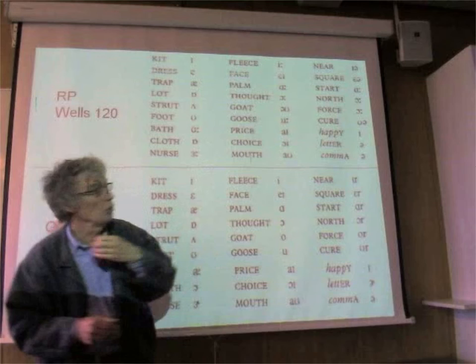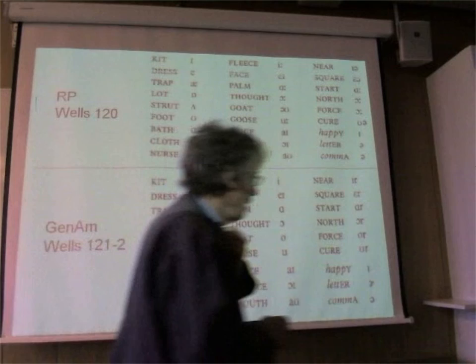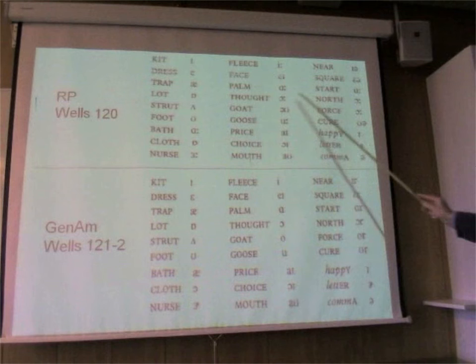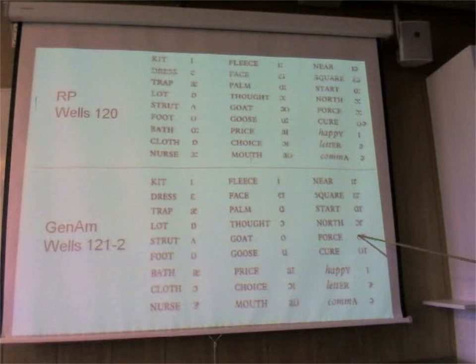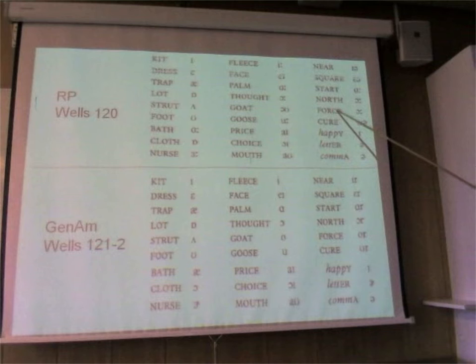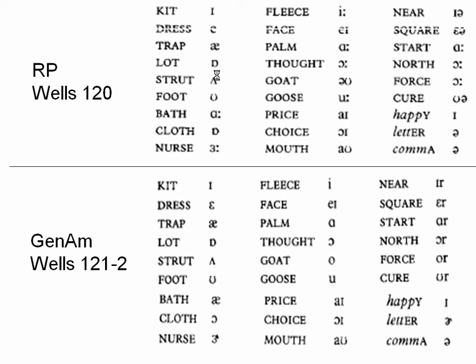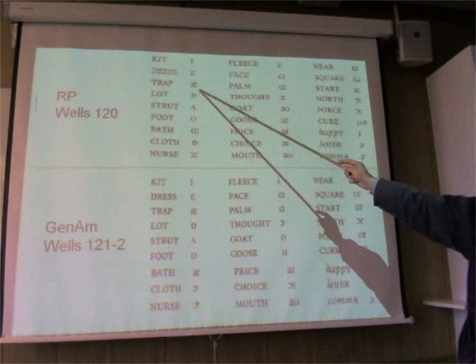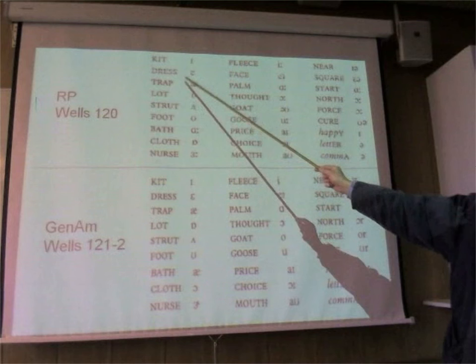That's why we have more sets than we used for RP. Most dialects have several of these together as one. For instance, bath and trap is the same in American, but we keep them separate because we want to be able to point out that it's bath and trap. Then you ask which word is a trap word or which is a bath word.